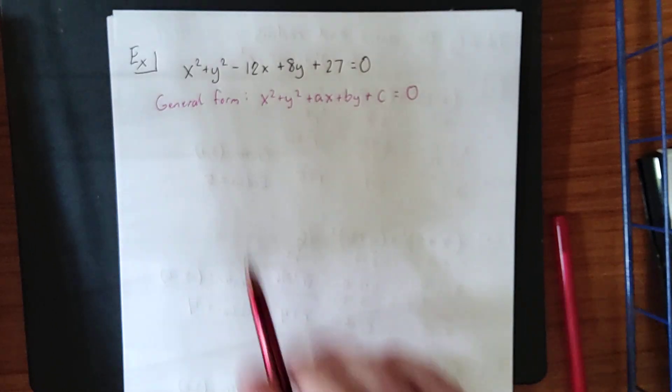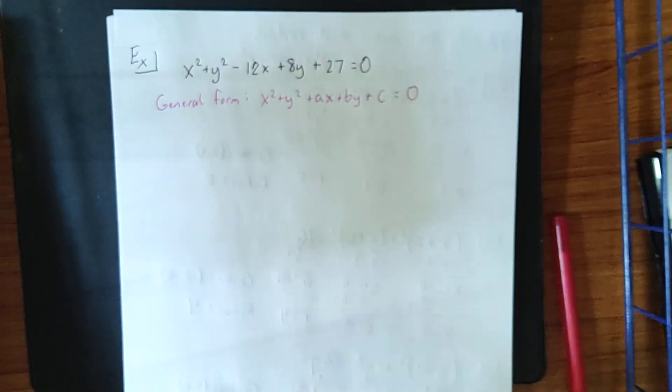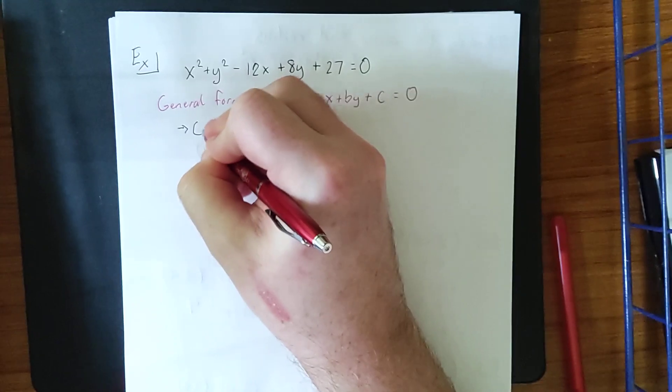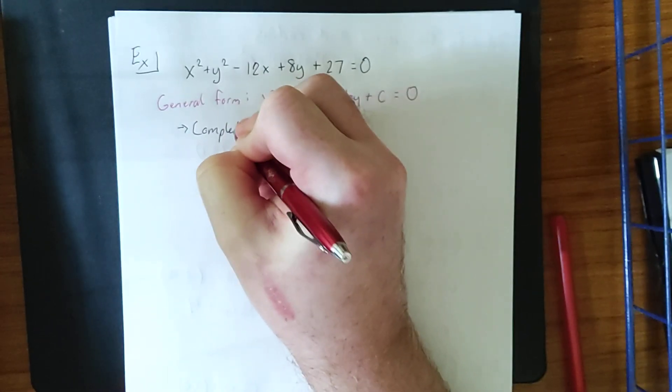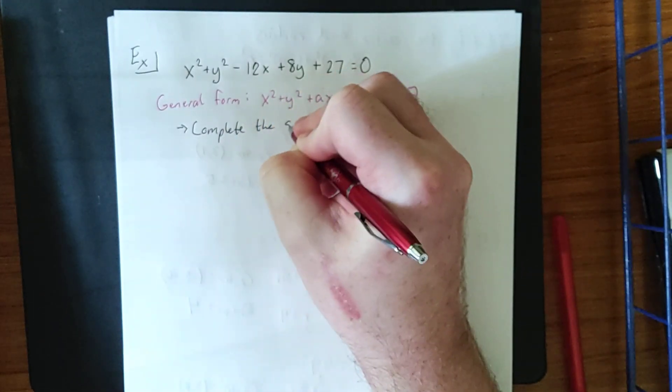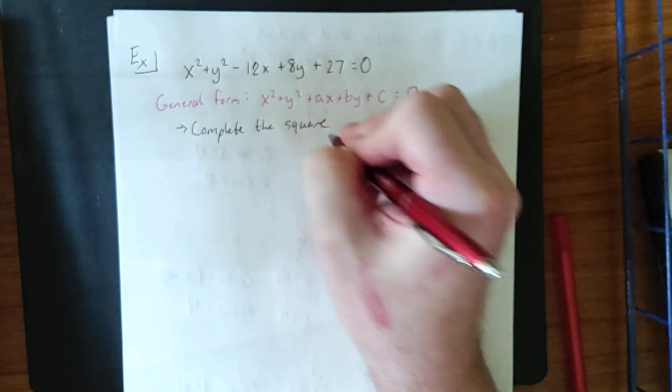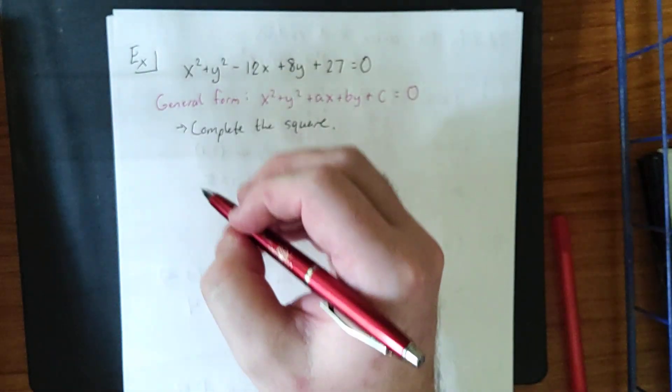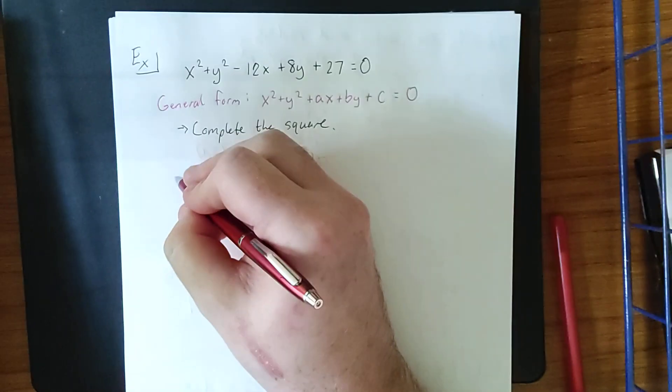Now, there is a method for converting from general form back into standard form, which is to complete the square twice. We need to complete the square once for the x variable, and we need to complete it once for the y variable. So the first thing I'm going to do is regroup.